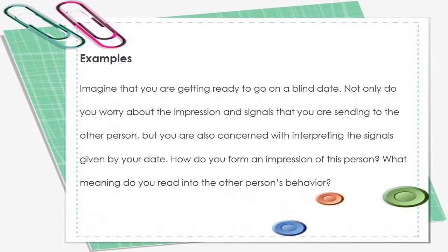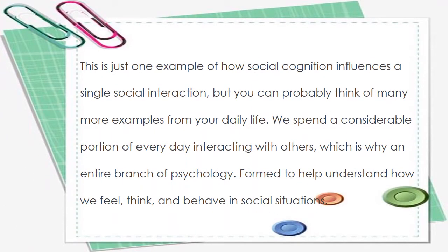One example is: imagine that you are getting ready to go on a blind date. Not only do you worry about the impression and signals that you are sending to the other person, but you are also concerned with interpreting the signals given by your date. How do you form an impression of this person? What meaning do you read in the other person's behavior? This is just one example of how people's cognition influences a single social interaction.